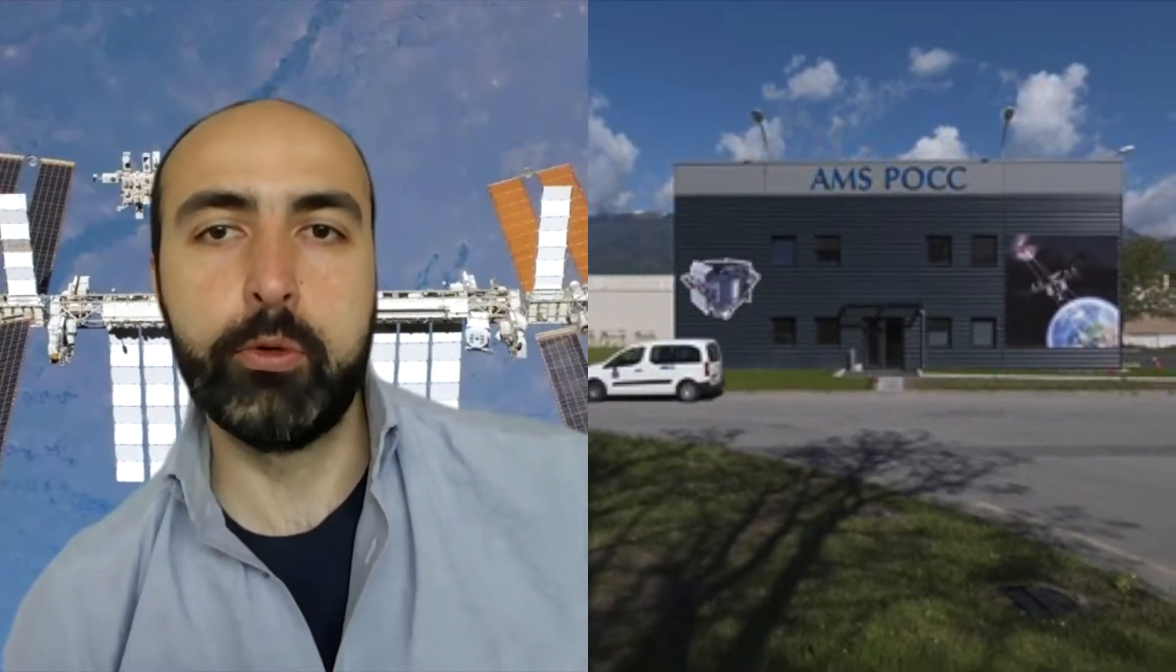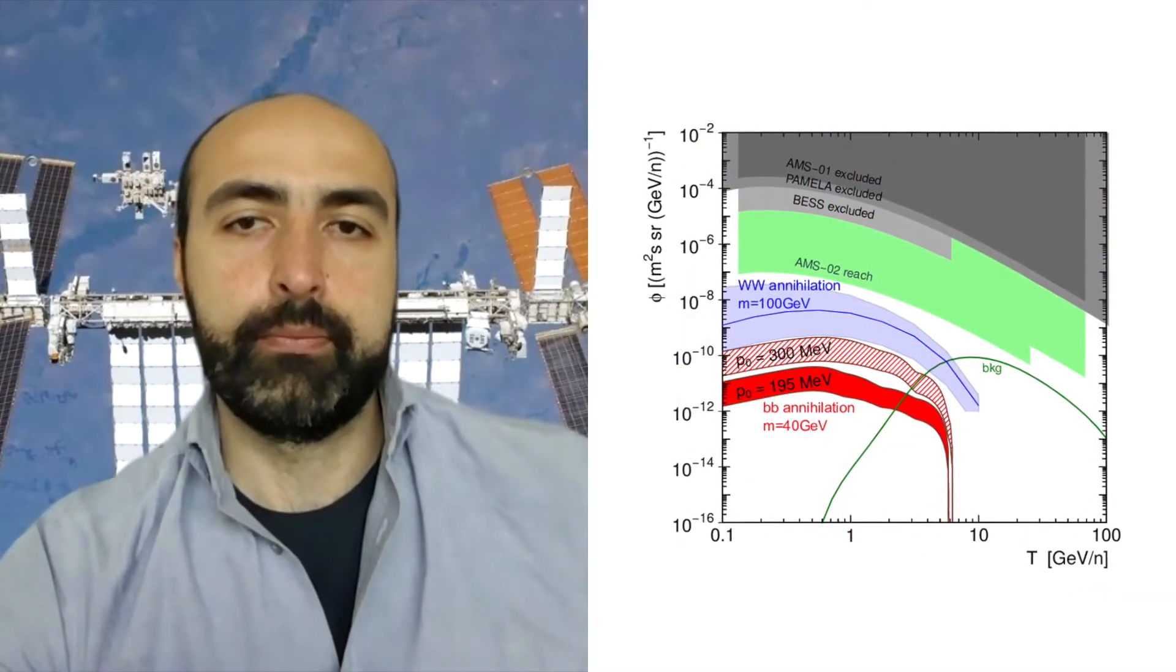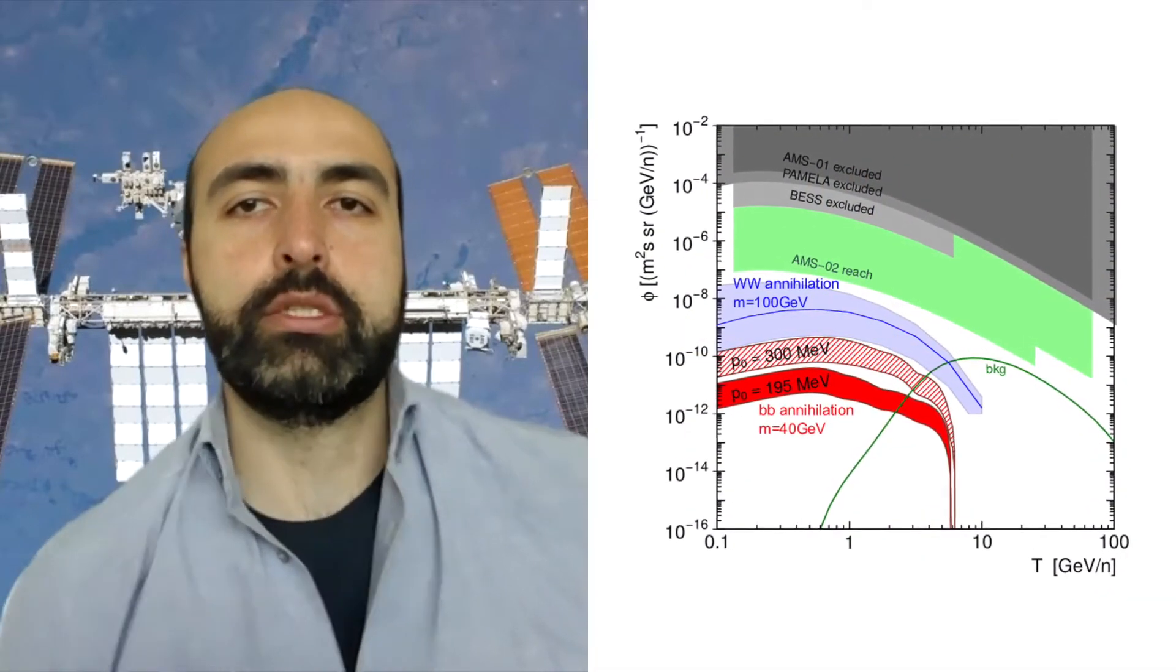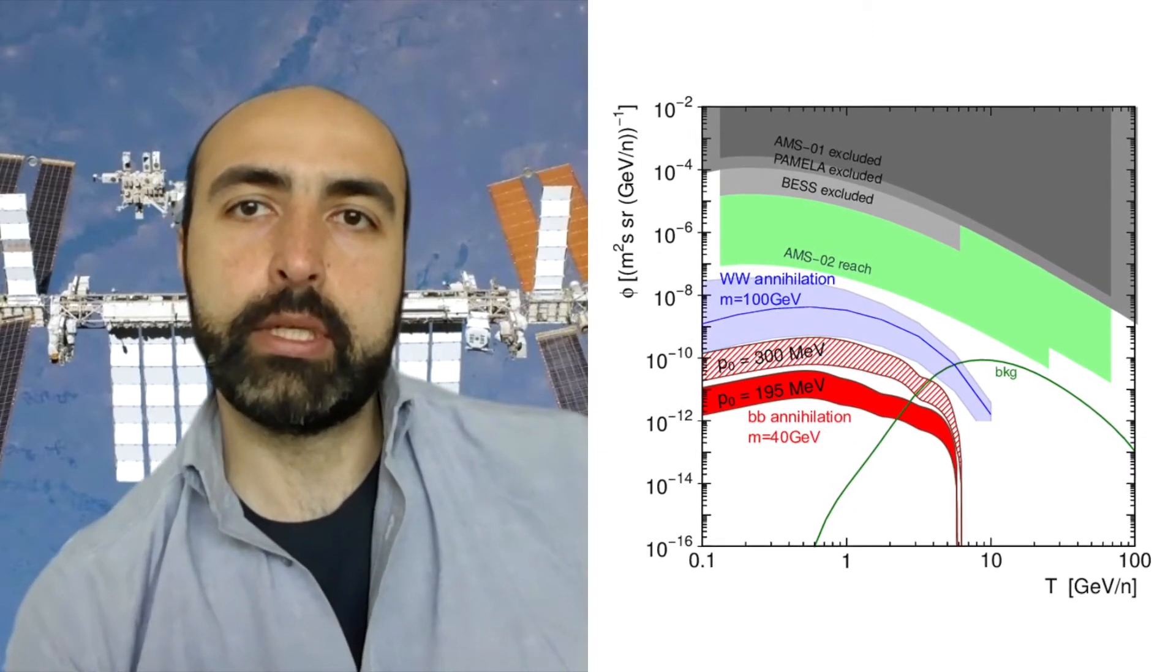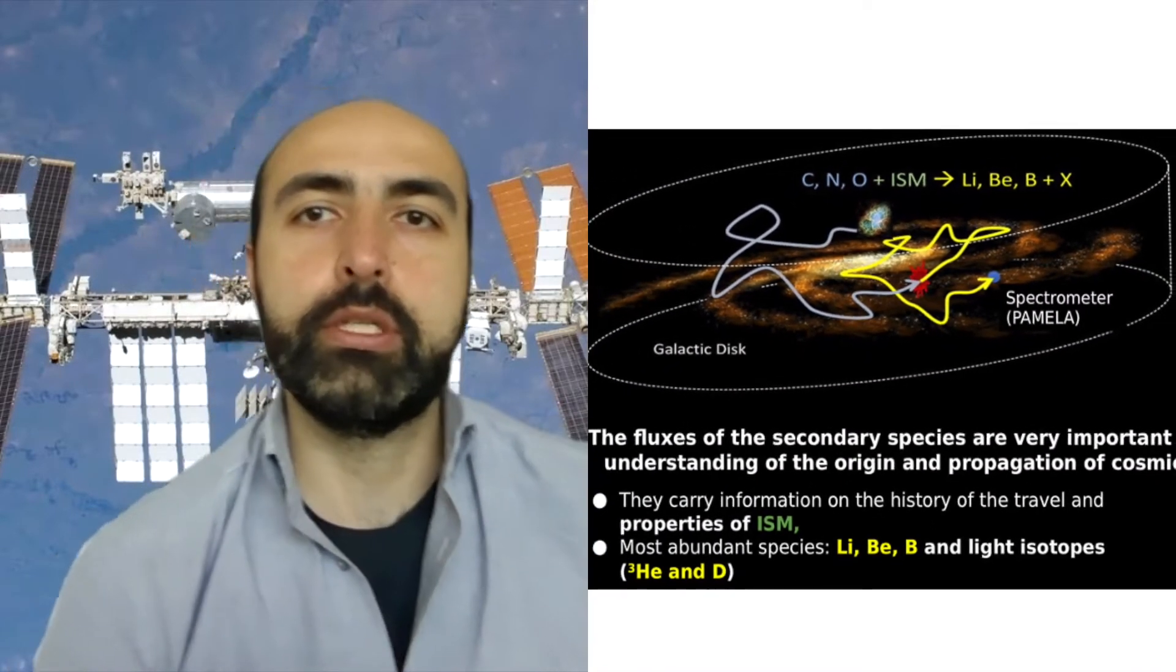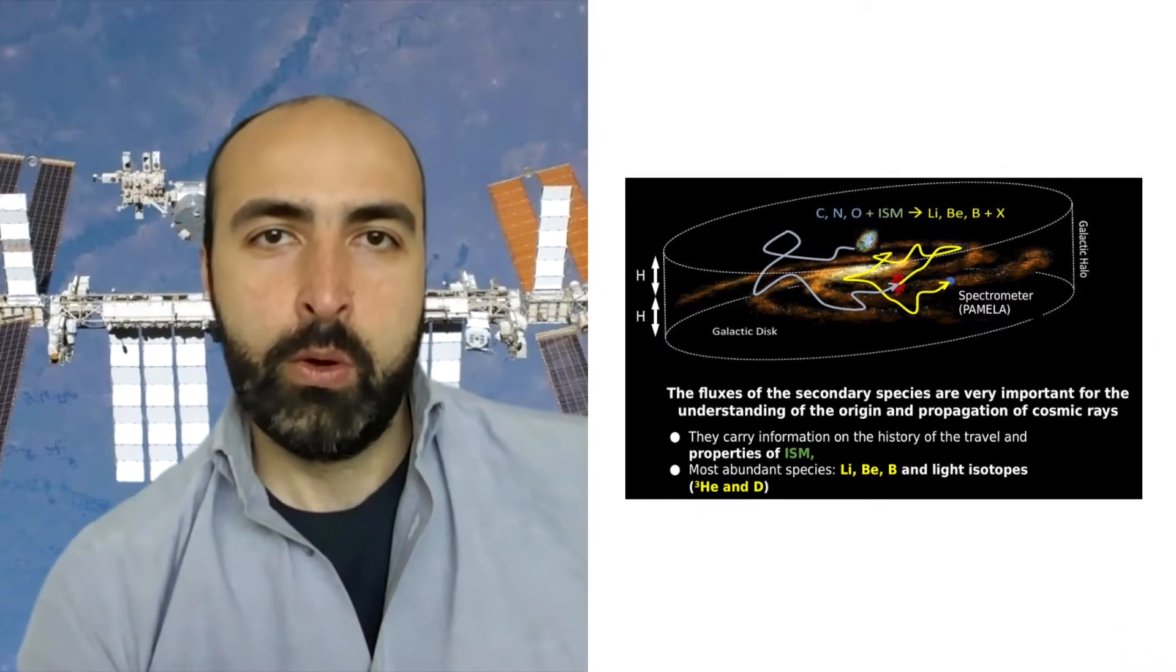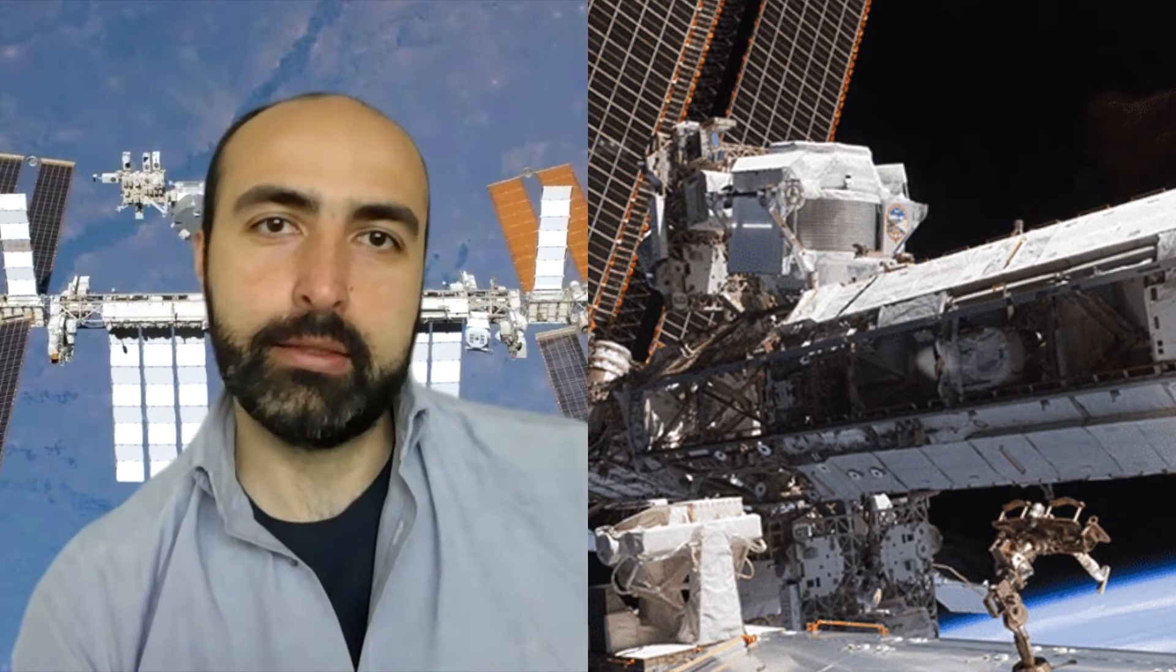The TRENTO group shares the responsibility of operating AMS, and we periodically take shifts in the AMS remote control room located at CERN in Switzerland. Our main activity is the analysis of the AMS data. Currently, we are searching for dark matter signals in the cosmic ray antimatter, and we are also measuring the cosmic ray residence time in our galaxy by studying the isotopic composition of the cosmic light nuclei. We always look for bright and motivated students to join us in this endeavor.